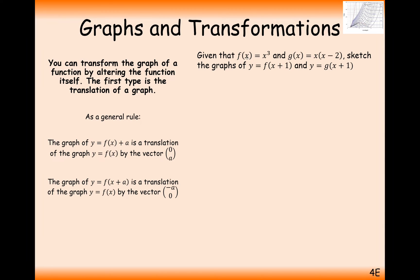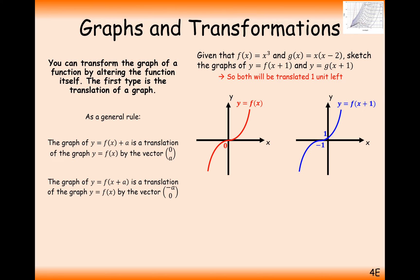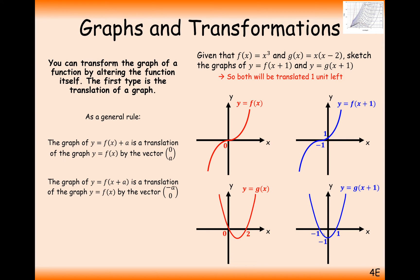The next type of graph: given that f(x) = x³ and g(x) = x(x − 2), sketch f(x + 1) and g(x + 1). In both of these curves, we're going to move left by 1, because we're adding 1 inside the bracket, so our transformation is minus 1. Moving it left by 1 gives us this graph for f(x + 1), and this graph for g(x + 1). Note that when you do a graph transformation, make sure you mark on any intersections with the axes so the examiner can see exactly what you're doing.